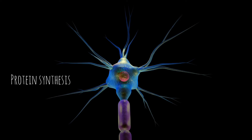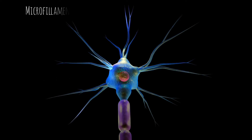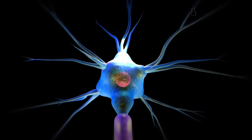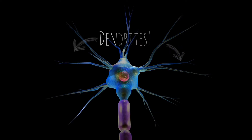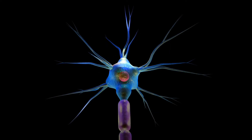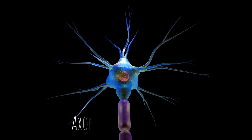Nissl bodies contain ribosomes and are hence concerned with protein synthesis in the neuron. Neurofibrils consist of microfilaments and microtubules. Dendrites have Nissl granules and neurofibrils, which transmit impulses towards the nerve cell body. Usually, dendrites are shorter than the axon.